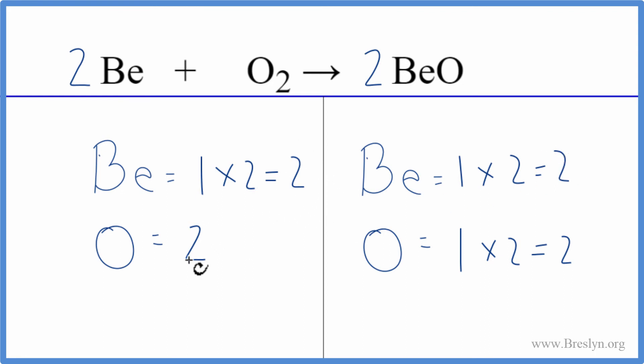Numbers on each side are the same. This is Dr. B with the balanced equation for Be plus O₂ yields BeO. Thanks for watching.